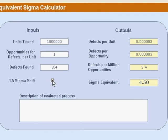Now if you like the 1.5 sigma shift, that would then make 3.4 defects per million opportunities equal to a 6 sigma process. Let's just walk through one other example.